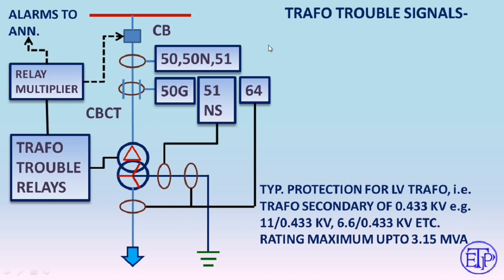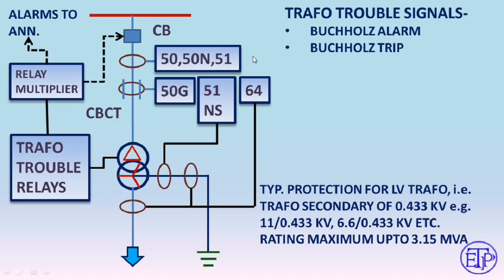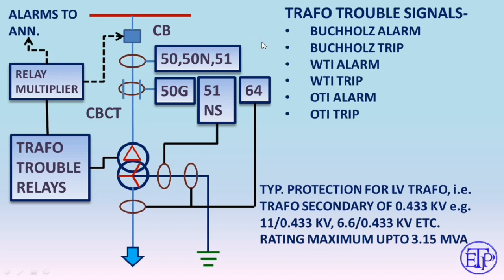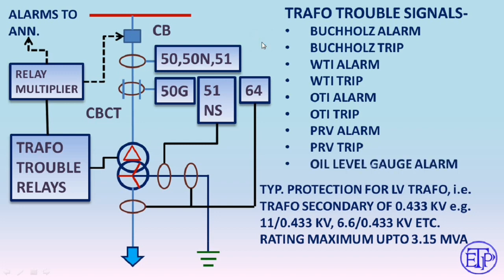The transformer trouble signals are: Buchholz alarm and Buchholz trip — generated by the Buchholz relay. Up to a certain level of gas generation, Buchholz alarm goes to the annunciator; above the setpoint it trips the transformer feeder. Then there is WTI alarm, WTI trip, OTI alarm, OTI trip, PRV alarm, PRV trip, and oil level gauge alarm. These are the most common transformer trouble signals exchanged with the transformer feeder.